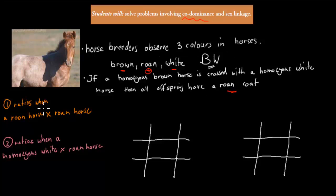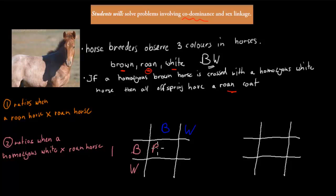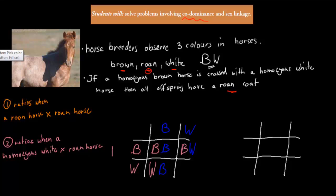Using this information we set up the Punnett square. The female has one brown allele and one white allele, and the male — since we're crossing two roan horses — has the same. If we get capital B from the female and capital B from the male, we get homozygous brown — a brown horse. If we get B from the female and W from the male, that's a roan horse. W from the female and B from the male is also a roan horse. Last, W from the female and W from the male gives a white horse.